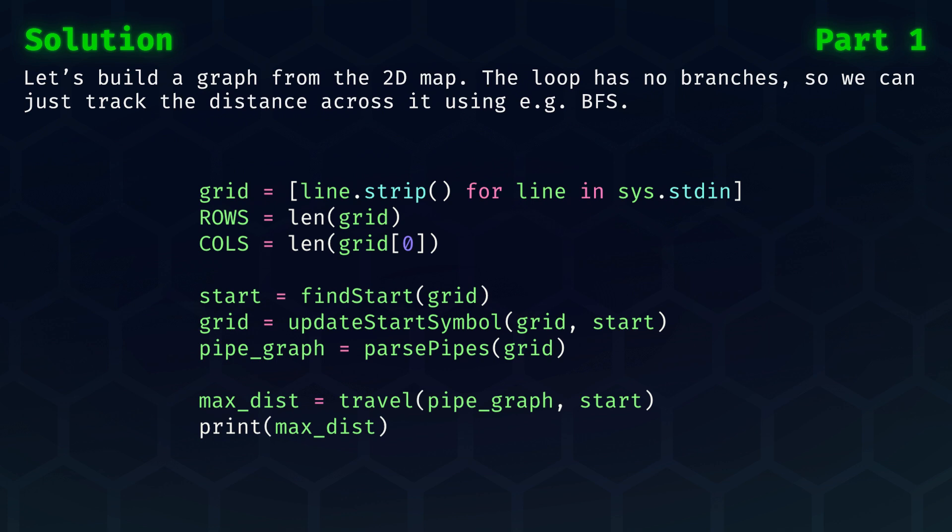This will help keep the sub-functions a bit simpler, as it removes an edge case when building the graph. Once we have the updated grid, we'll get our adjacency list, which is the pipe graph. Given this graph and the starting location, we'll travel across the loop, which will give us our maximum distance.